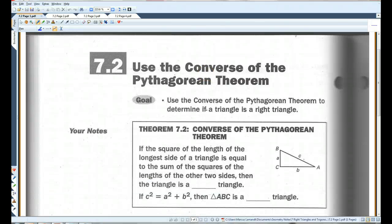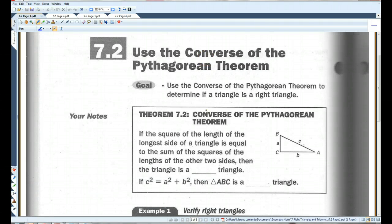All right, 7.2, use the converse of the Pythagorean Theorem. Okay, so hopefully you guys remember the Pythagorean Theorem. C squared equals A squared plus B squared, or A squared plus B squared equals C squared, however you want to write it.